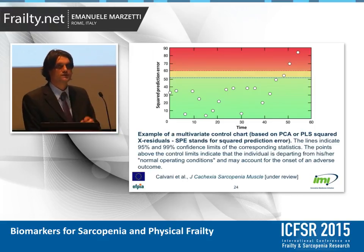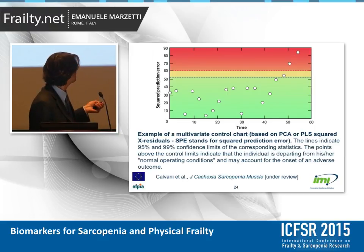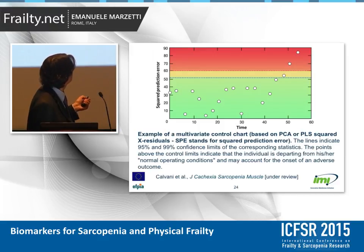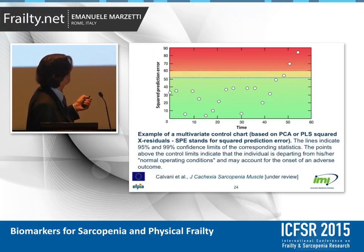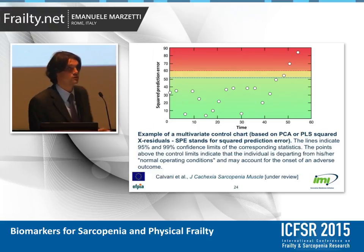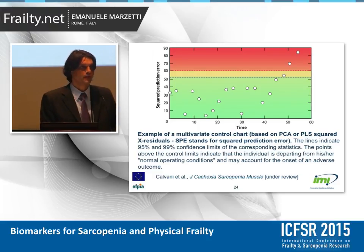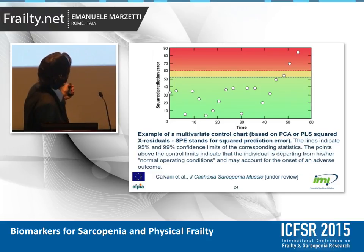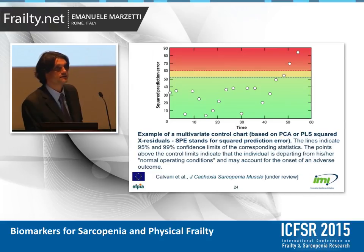What can we do with such a model? For instance, we might build a multivariate control chart. So a person at a normal level of functioning — same person — everything is okay. At a certain point, the person crosses a control line: something is going wrong. And the only way to obtain this information is by constructing these highly complex statistical models.